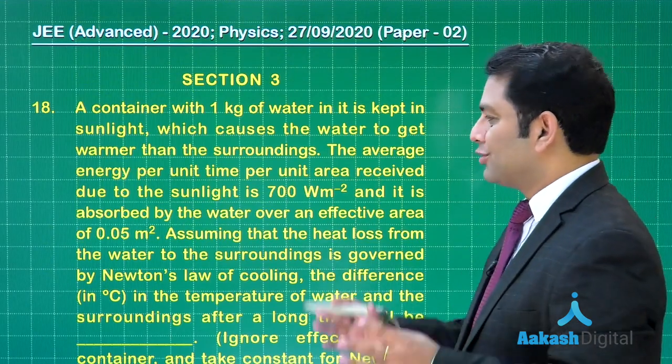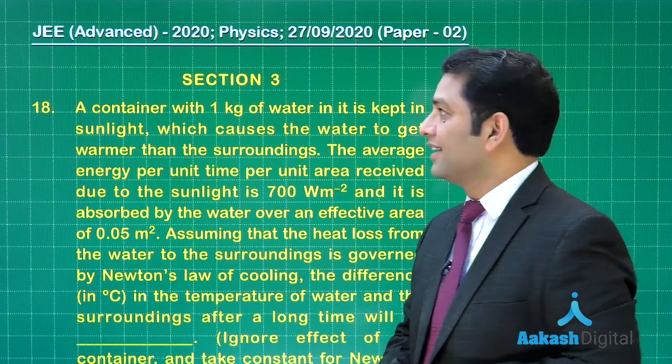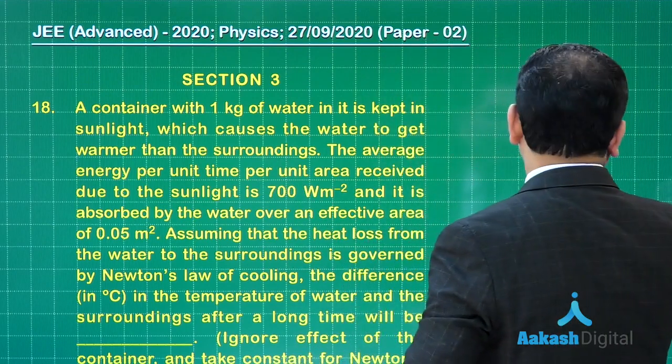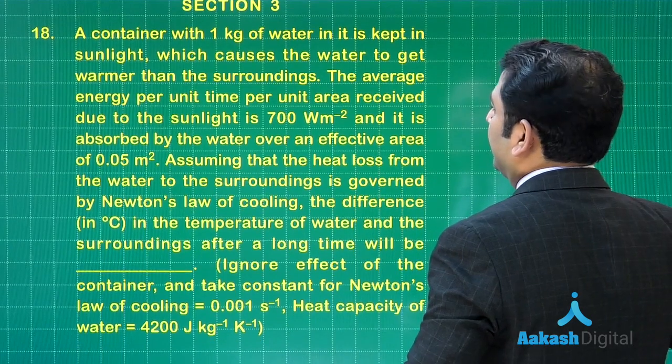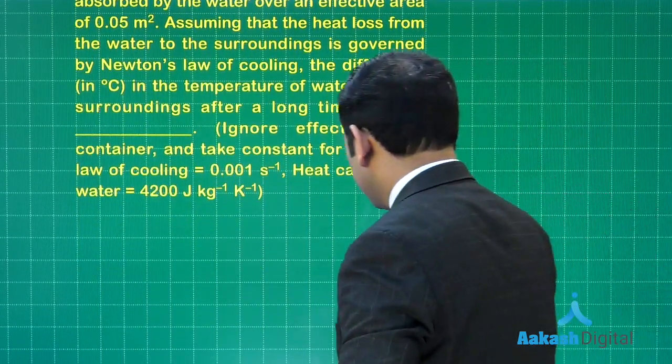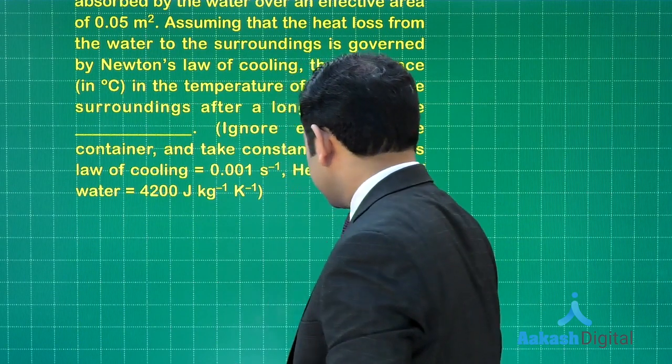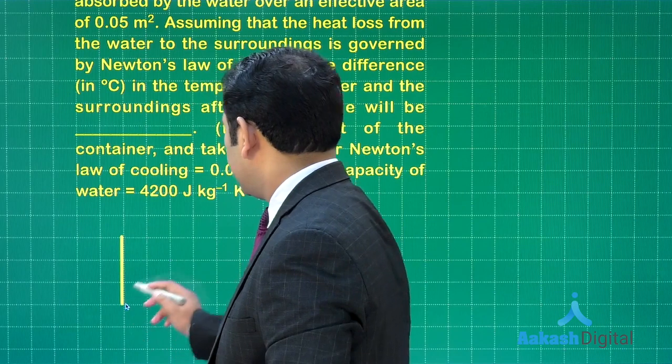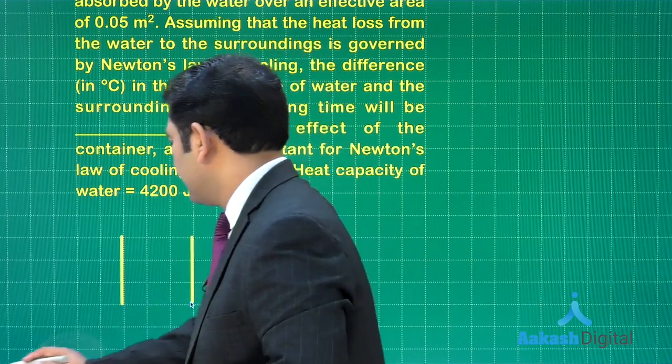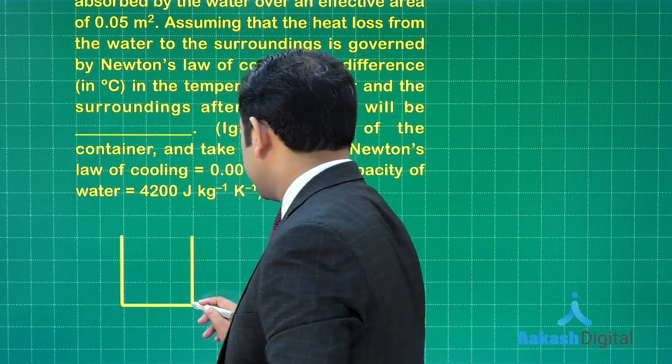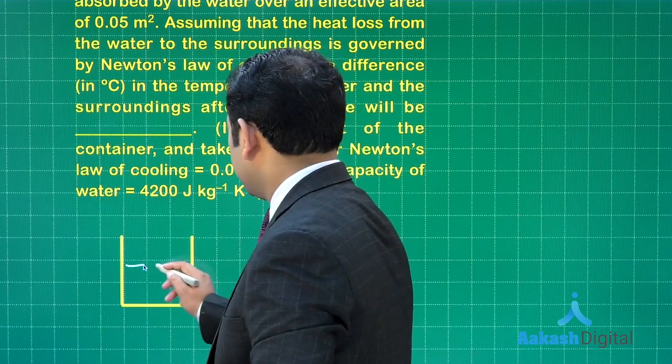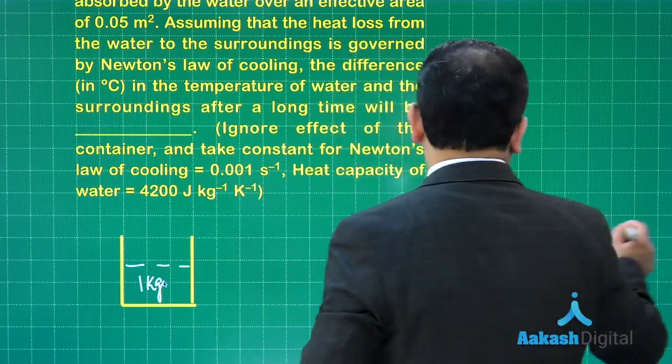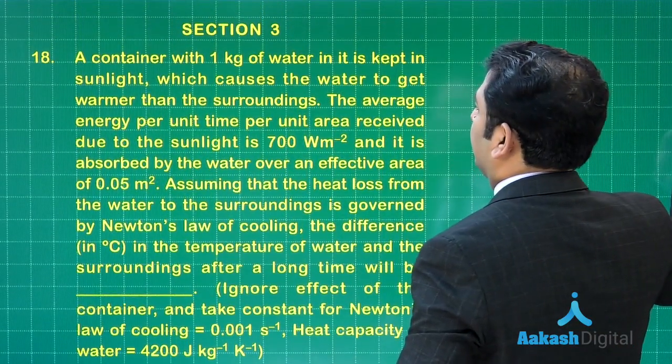Question number 18, and this is going to be the final question of this section. Now let us try to see. There is a container with 1 kg water kept in sunlight. We need to go with the figure simultaneously, so let me just go for a representative figure. Here is the container and this particular container has 1 kg of water in this.